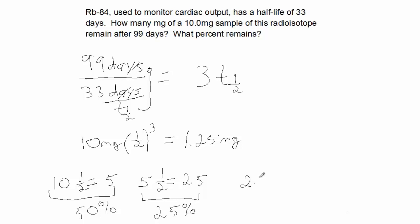I take the 2.5 and multiply that by the third half-life, which will give me the 1.25. And this is 12.5 percent.